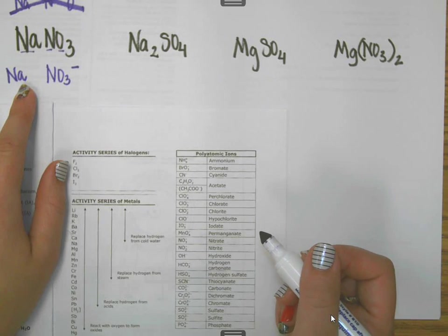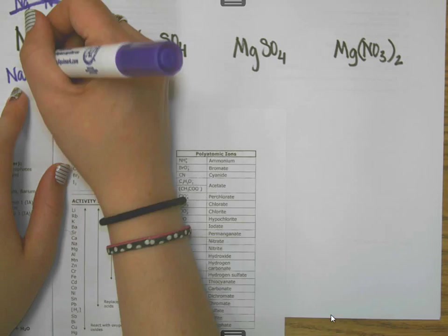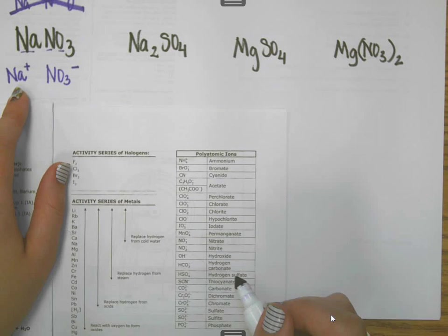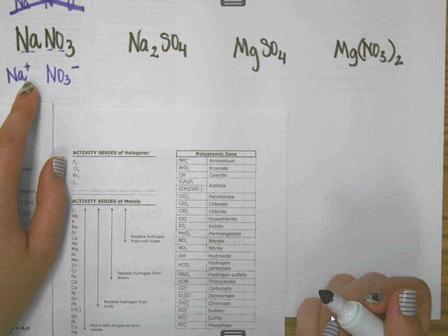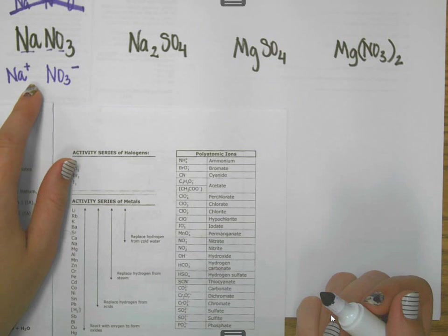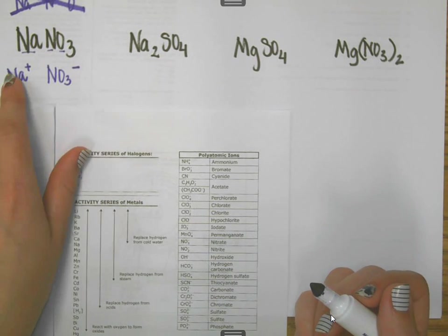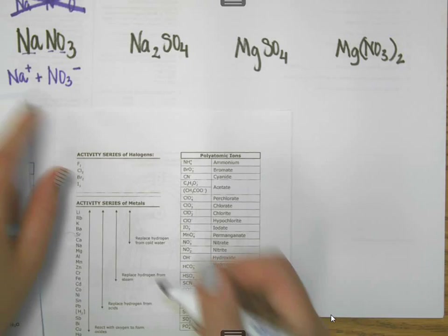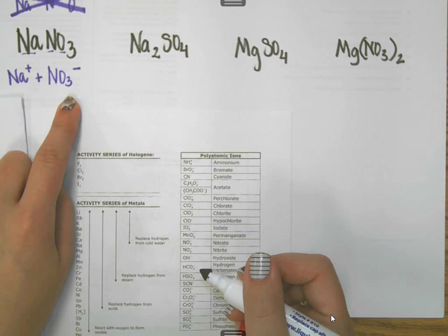For sodium, it's a group one metal, which means that it's going to lose one valence electron. I can write the one, but I don't have to. I don't have any other coefficients up here, so I leave it just like that. It breaks up into one sodium ion and one nitrate ion.